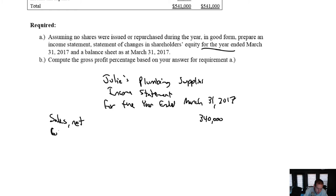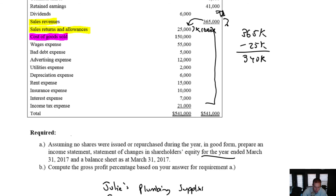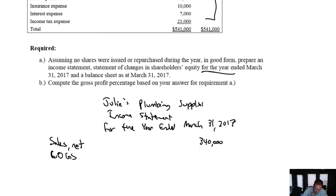We deduct from that number the cost of goods sold — just the next one down on our trial balance here — which is $150,000. Sales minus COGS is gross profit: $340,000 minus $150,000 is $190,000.